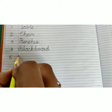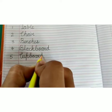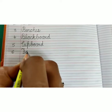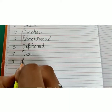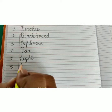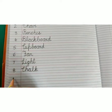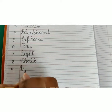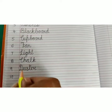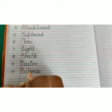Number 5: C-U-P-B-O-A-R-D, Cupboard. Number 6. Number 9: D-U-S-T-E-R, Duster. Number 10: P-I-C-T-U-R-E-S, Pictures.